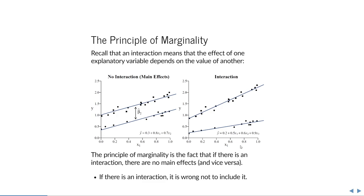In an interaction, you can't identify an overall effect of x1 — it's not the same for one group or the other, and the average doesn't apply to either. Similarly, the difference between males and females depends on the value of x1. So there is no overall effect of x1, and the effect of each variable depends on the value of the other — that's what the interaction captures.